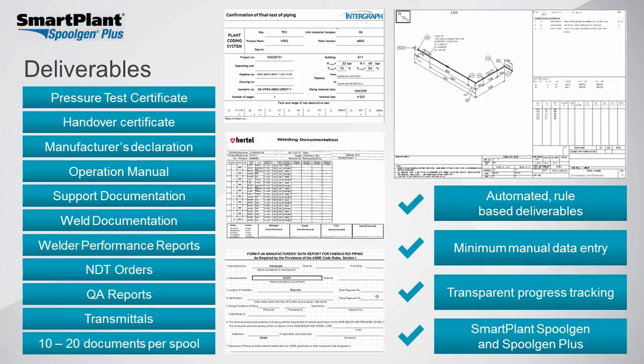If there are 2 to 5 spools per isometric, it could require from 20 to 100 manual documents to be created for every single isometric shipped and received on site. That's where SmartPlant SpoolGen Plus comes into play — most of that can be automated using the rules and automation in the system, leveraging the specialist's knowledge to make the specialist and company more productive.